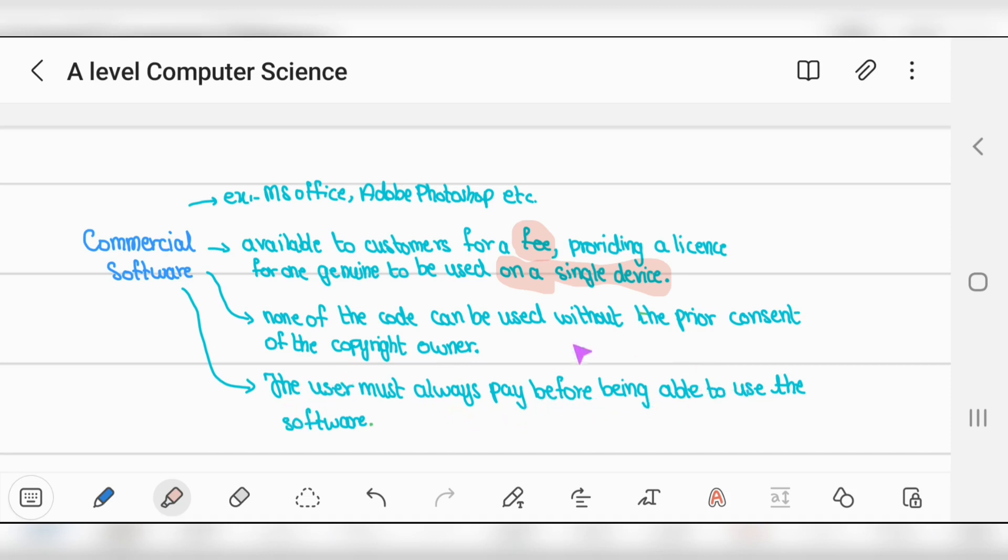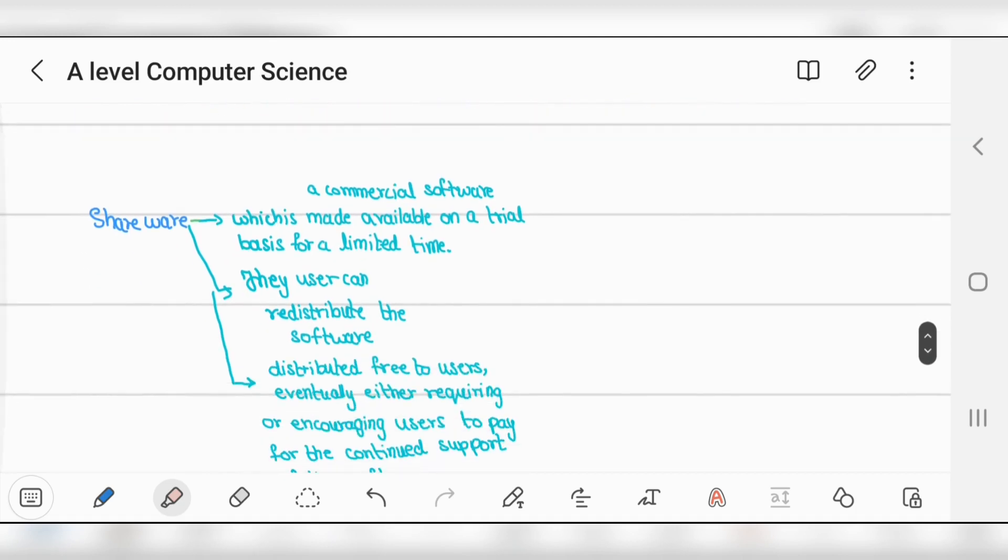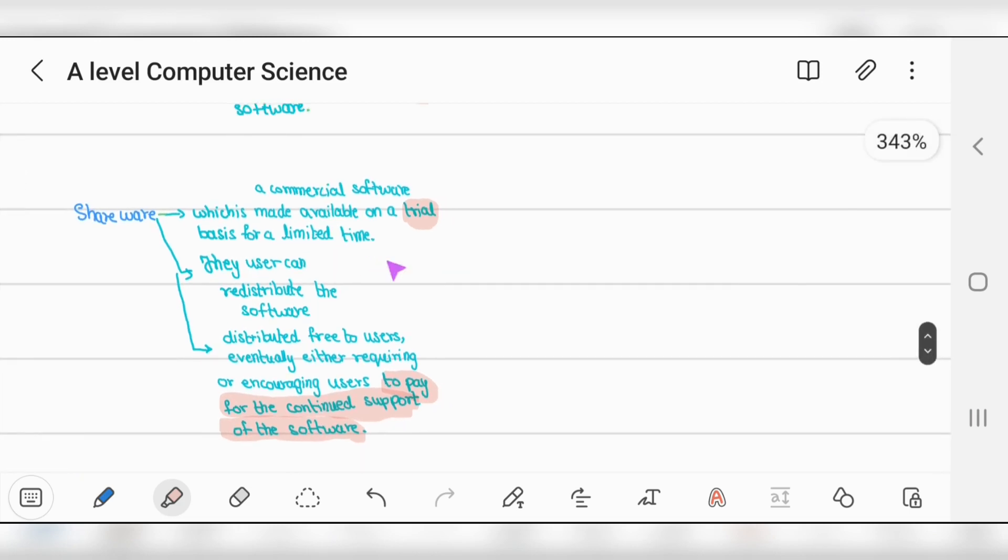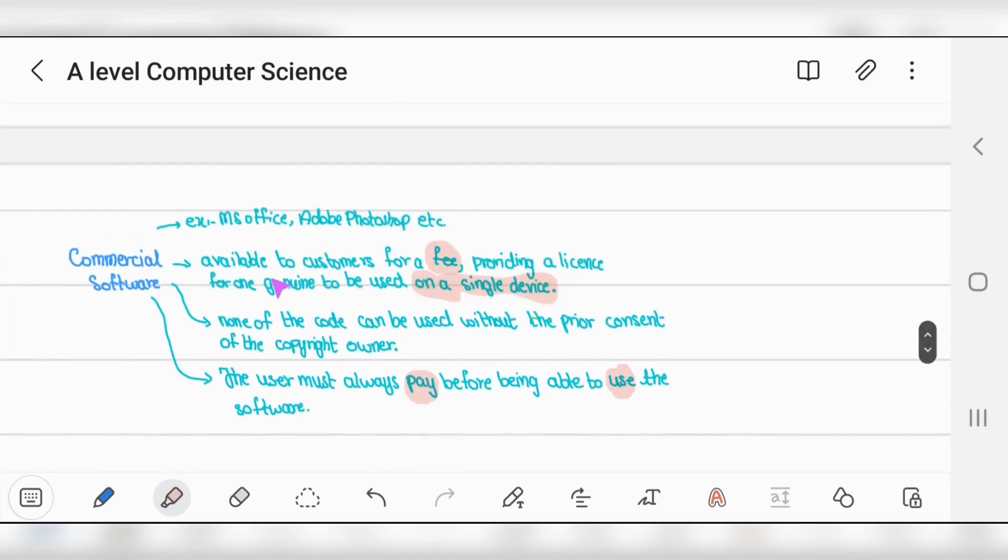Shareware is made available on a trial basis for limited time. It's commercial software that users can redistribute. Distributed free to users, eventually requiring or encouraging them to pay for continued support. There should be no unethical intentions - only to encourage users to pay for continued support.